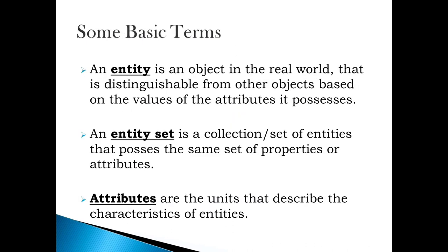Let's discuss some basic terms related to Entity Relationship Diagram. First is Entity. An entity is an object in the real world that is distinguishable from other objects based on the values of the attributes it possesses. Next is Entity Set — it is a collection of entities that have the same set of properties. The units that describe the characteristics of entities are called Attributes.